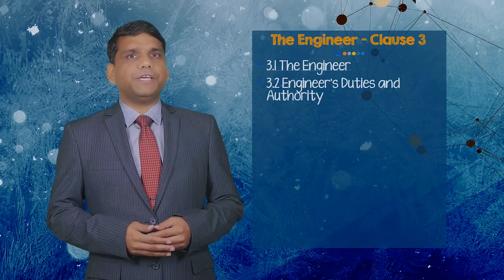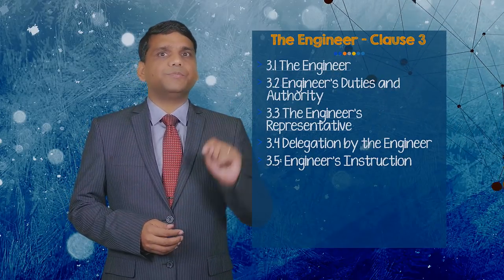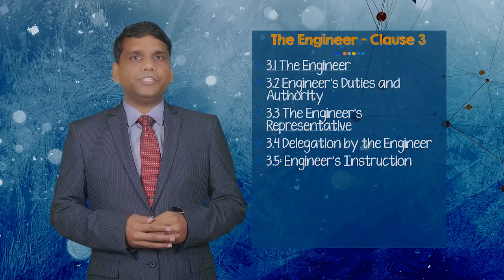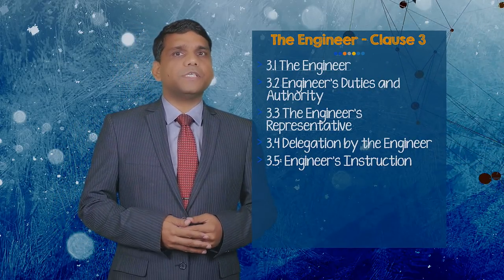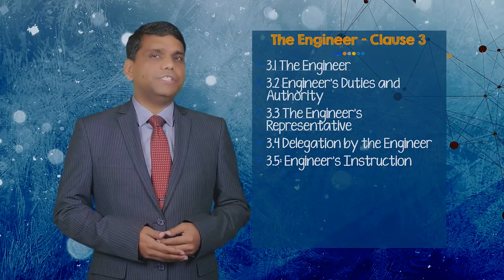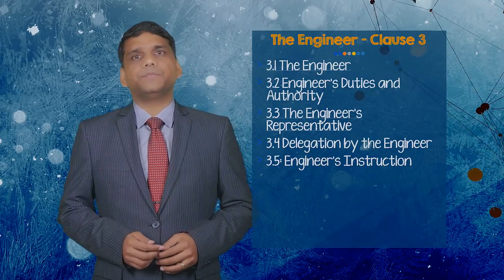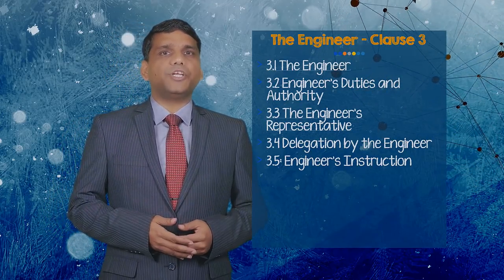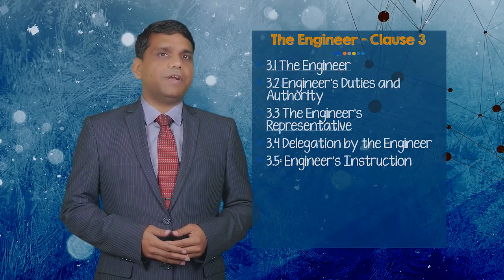Clause 3 of FIDIC Red and Yellow Book relates to the engineer. In the earlier FIDIC 99 edition of the Yellow Book, Clause 3 had only 5 sub-clauses without detailed procedure and time limits for engineer's determination. But there are some major changes in Clause 3 under the second edition of FIDIC Yellow Book released in December 2017.